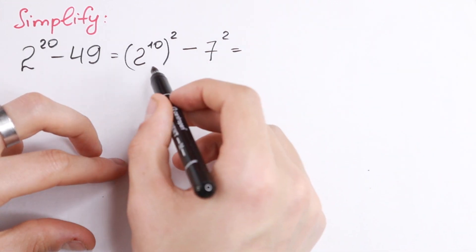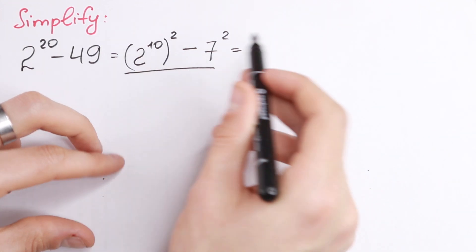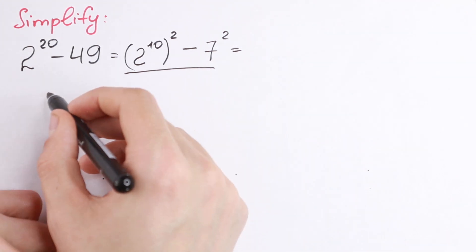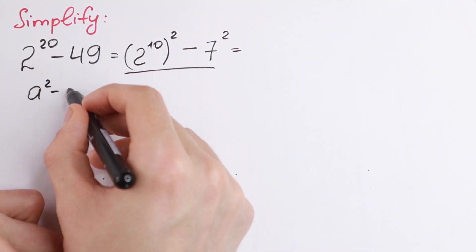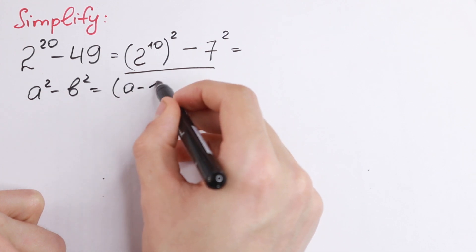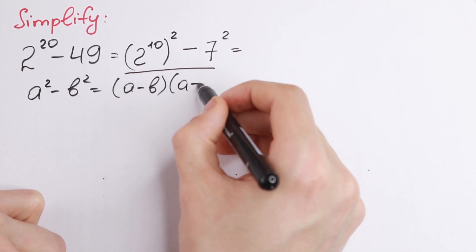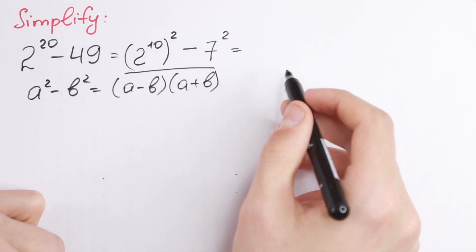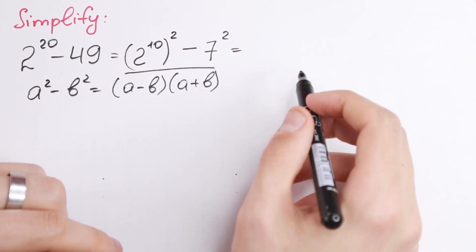And take a look, really interesting case, because we have some number squared minus some number squared. So this is a squared minus b squared. We will have a minus b times a plus b. How can we solve it? Take a look.